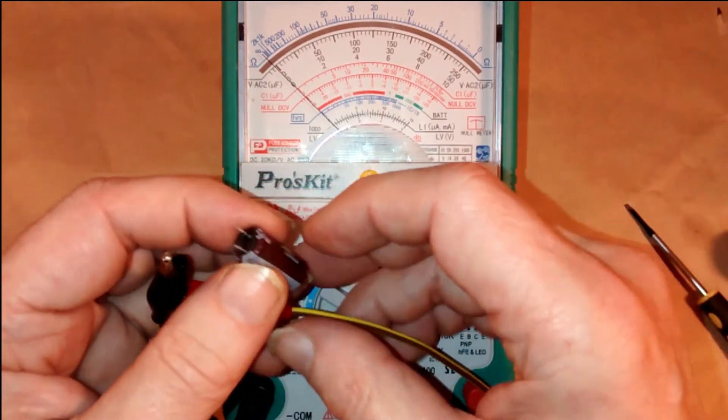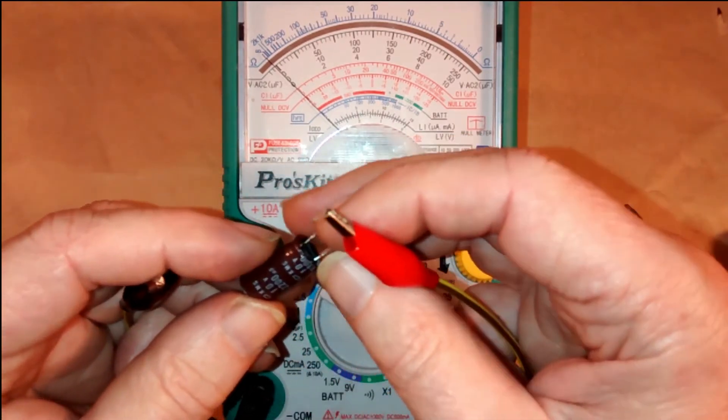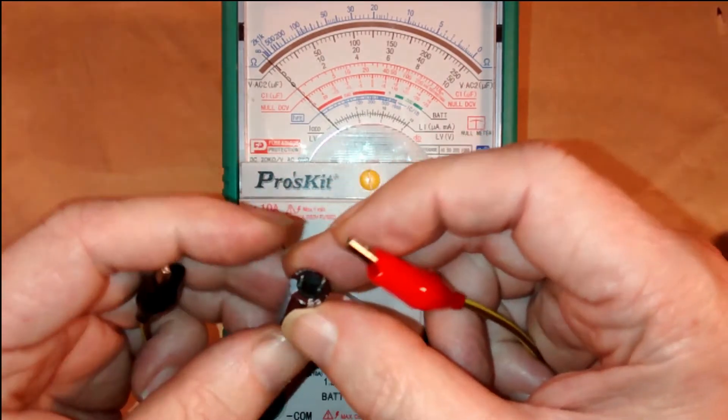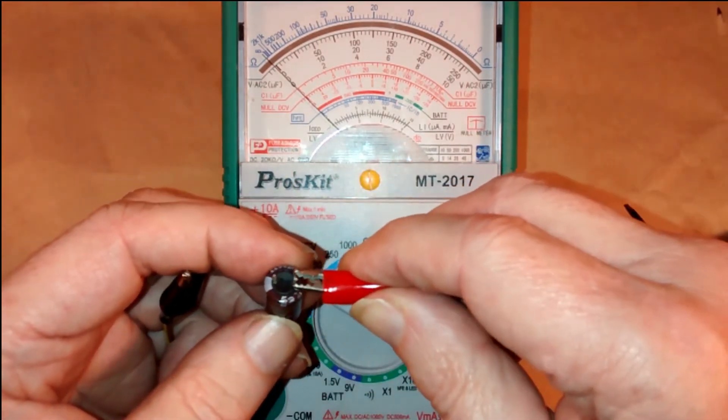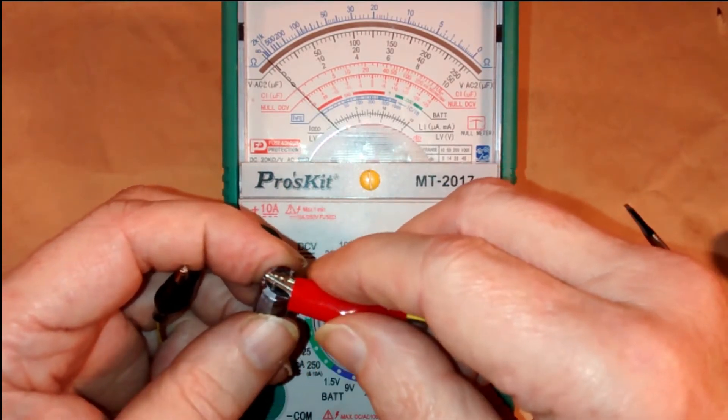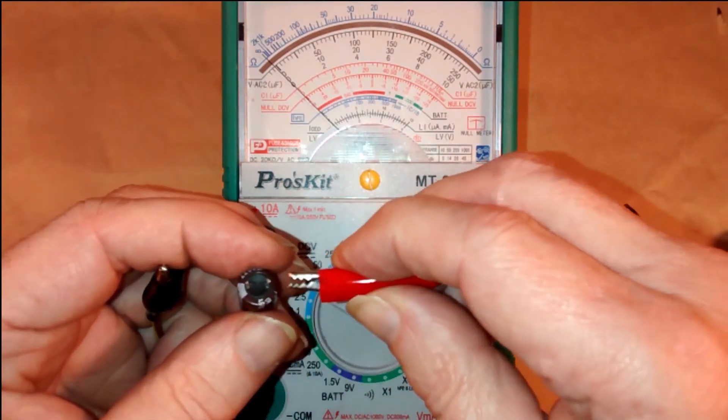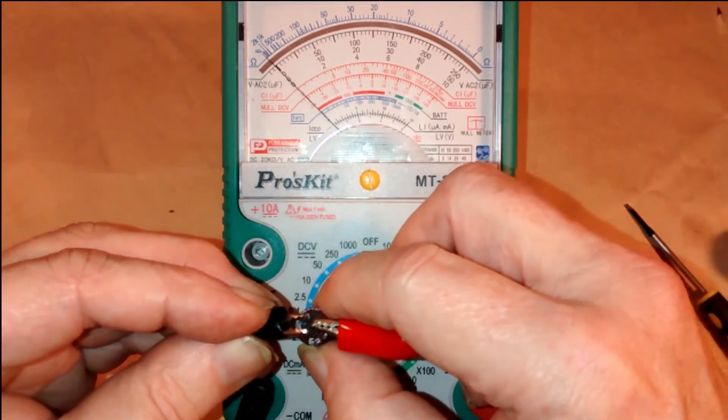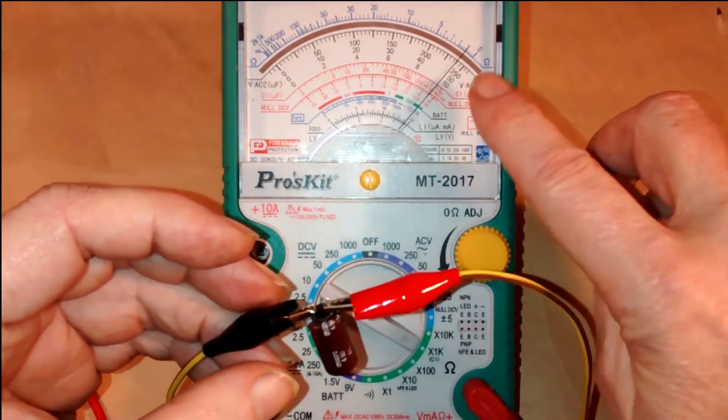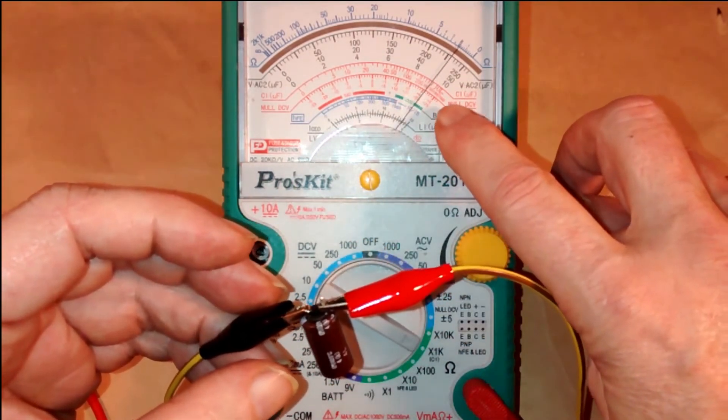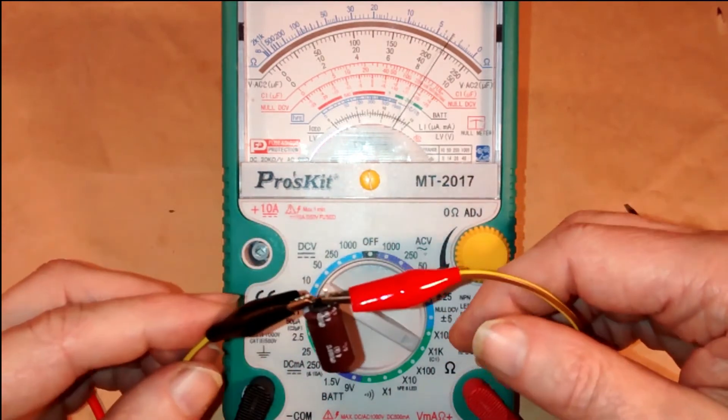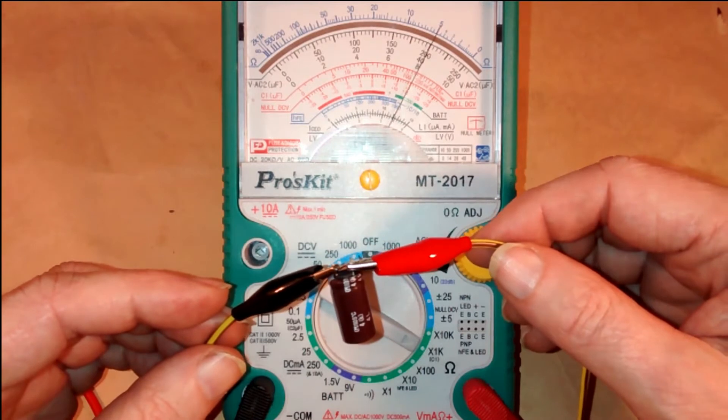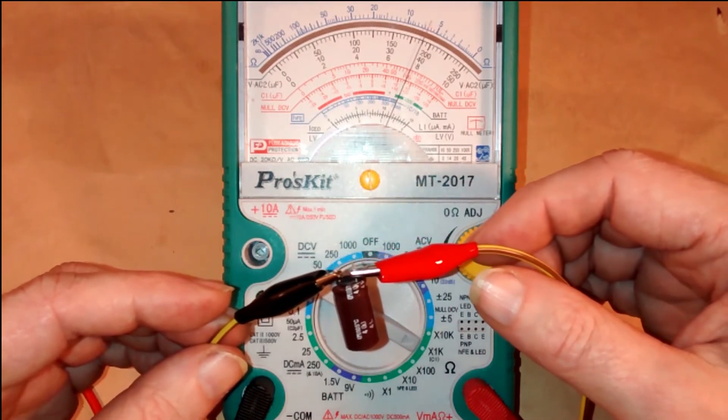As I said, the higher the capacity, this one is 2200 microfarads at 10 volts, the slower the needle will move. So again, make sure it's discharged. Positive to positive, negative to negative. See the needle flicked right across that, because it's 2200. And it's slowly now moving back, because this one has more capacity and it takes longer to charge.